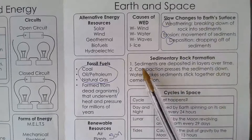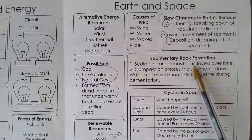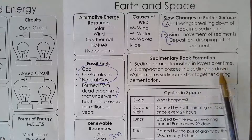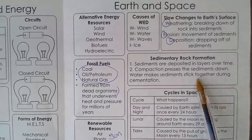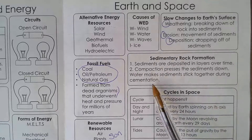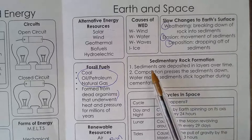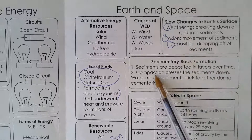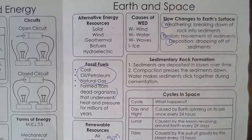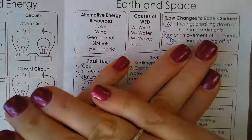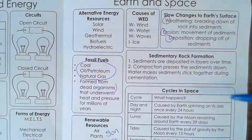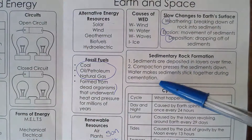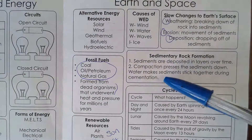Sedimentary rock formation. Sediments are deposited in layers over time. Compaction presses the sediments down. Water makes sediments stick together during cementation. You need WED first, then compaction where layers build on top of each other, and then water comes in to make it all stick together like cement — that's where the cementation comes from.